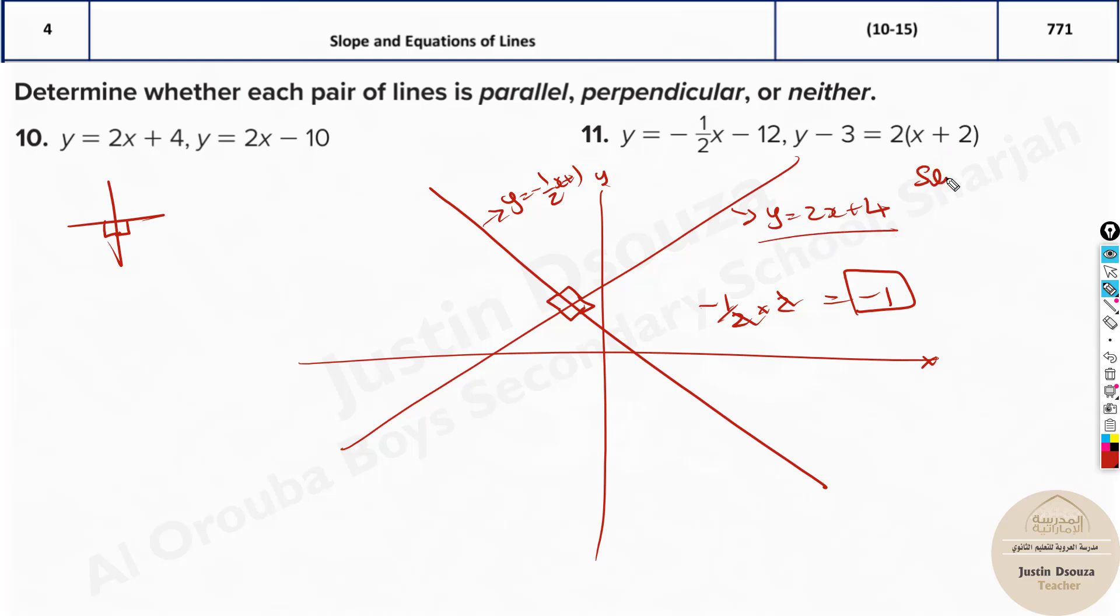Slope-intercept form has two things: slope and intercept. y equals mx plus b. m is the slope, b is the intercept. The 4 denotes that the line touches the y-axis at positive 4. What about this one? The 1 means it's touching at 1. And whatever is before x, those are the slopes. 2 and negative one-half. This is about perpendicular lines.